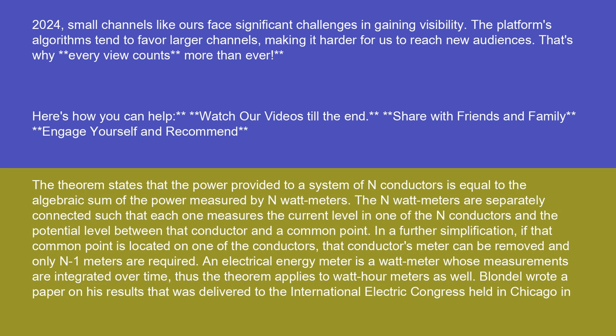The theorem states that the power provided to a system of N-conductors is equal to the algebraic sum of the power measured by N-watt meters. The N-watt meters are separately connected such that each one measures the current level in one of the N-conductors and the potential level between that conductor and a common point. In a further simplification, if that common point is located on one of the conductors, that conductor's meter can be removed and only N-1 watt meters are required. An electrical energy meter is a watt-meter whose measurements are integrated over time, thus the theorem applies to watt-hour meters as well.